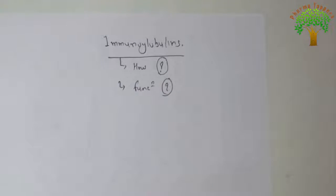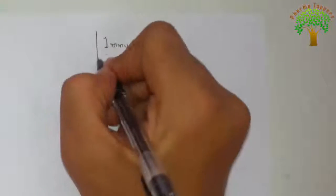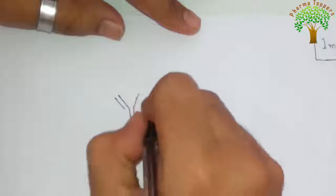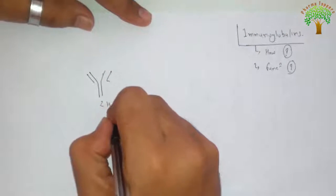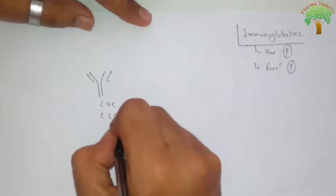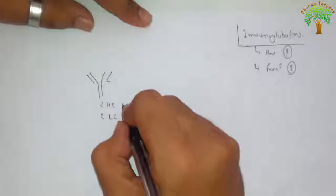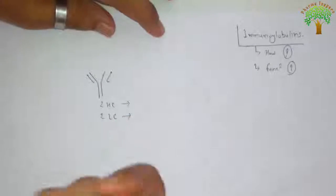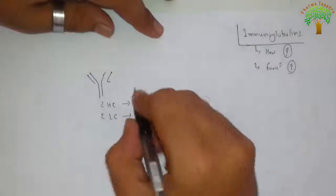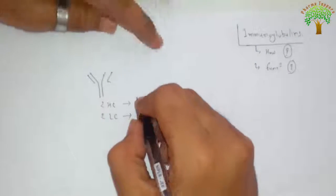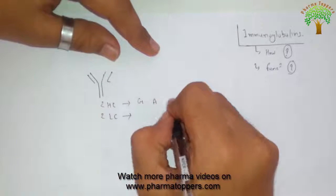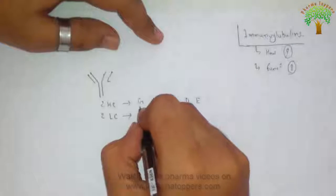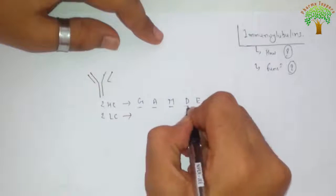Immunoglobulin can be classified - you already know the basic structure that immunoglobulin mainly contains two heavy chains and two light chains. On the basis of that, one can classify on the basis of heavy chains and on the basis of light chains. First of all, on the basis of heavy chains, it is classified mainly as immunoglobulin G, A, M, D, E.